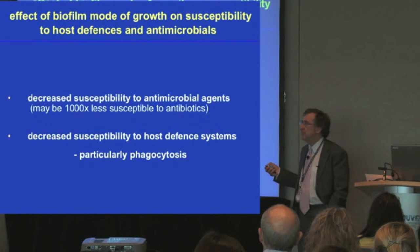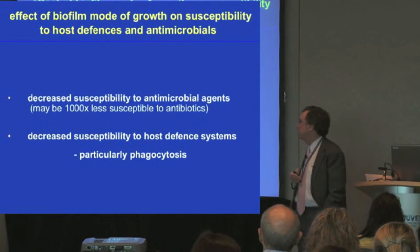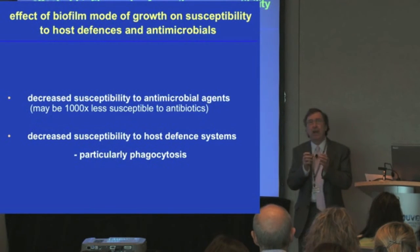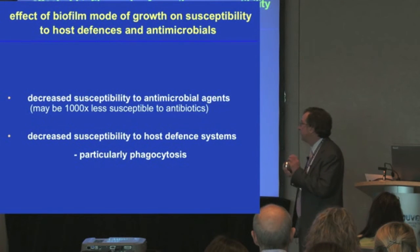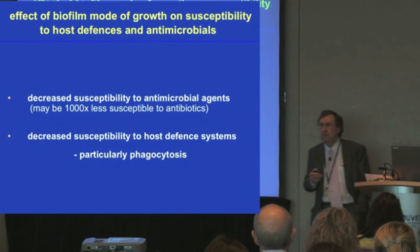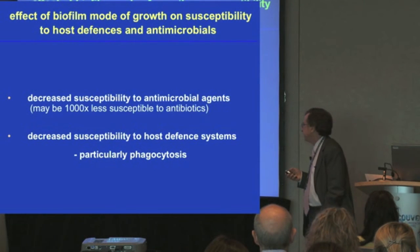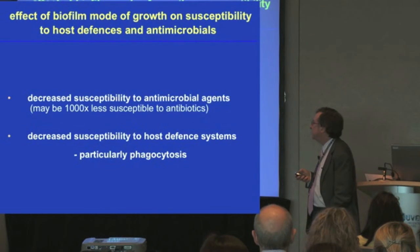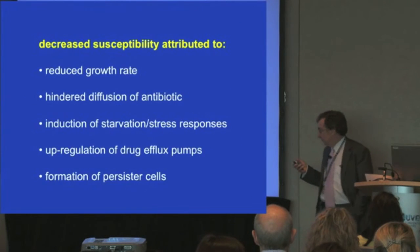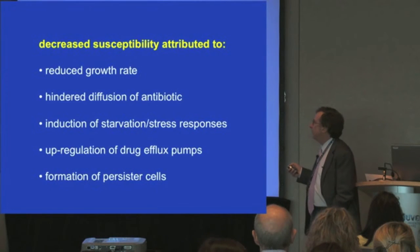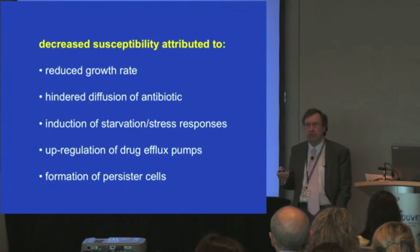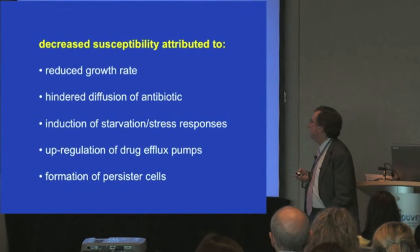Biofilm bacteria can be almost a thousand times less susceptible to antibiotics than the corresponding planktonic cells. For example, if you take P. gingivalis in aqueous suspension and compare that with P. gingivalis growing as a biofilm, you'll need a thousand times more antibiotic to kill the same number of cells as for the planktonic form. There is also a greatly decreased susceptibility to host defensive systems, especially phagocytosis. This decreased susceptibility is attributable to the reduced growth rate, hindered diffusion of the antibiotic, induction of starvation stress responses, upregulation of various efflux pumps, and the formation of persister cells.